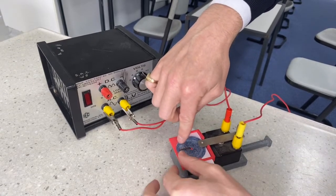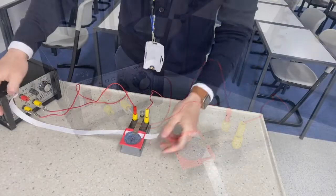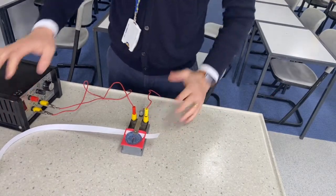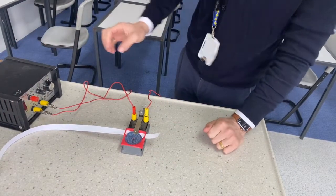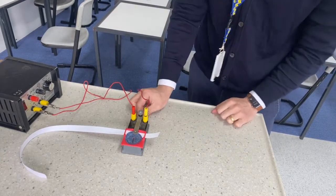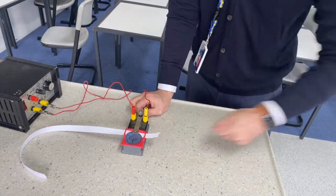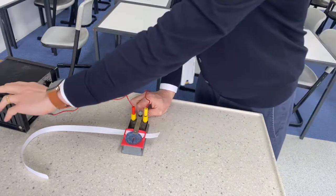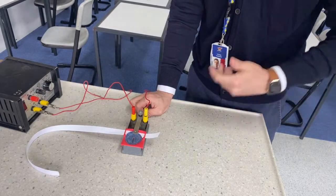What we're going to do is—and I recommend you get some of your partners in your group to assist you with this—get one person just to hold the ticker timer in place by its little handle, another person to turn the power pack on, and you can pull through your tape. The trick with this is pulling it through at a constant rate.